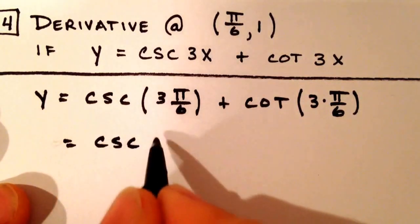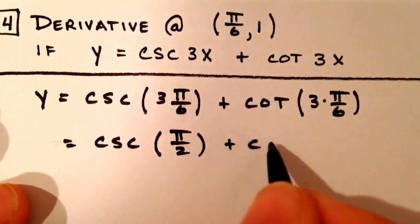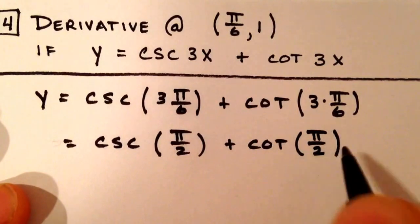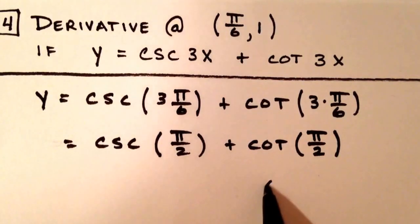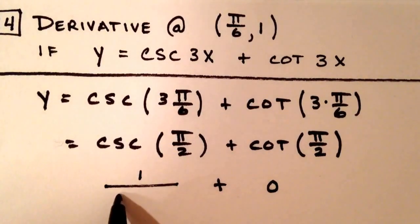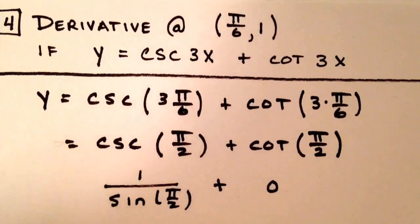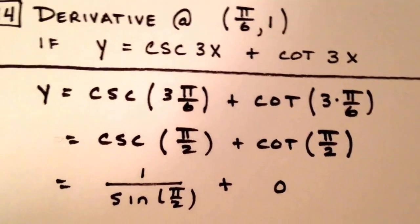This is the cosecant of π/2 plus the cotangent of π/2. Now the cotangent of π/2 is 0, and the cosecant is 1 over the sine of π/2, and the sine of π/2 is equal to 1. So this really is equal to 1. They didn't just make that up.